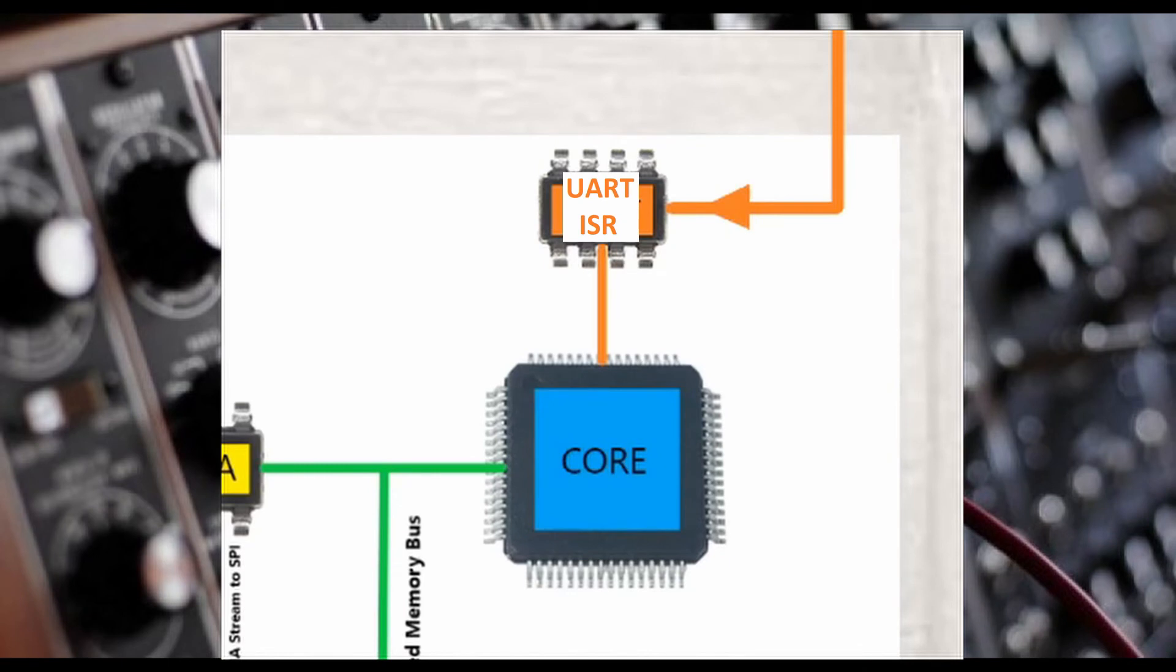The core will check if other Interrupt Service Routines that are running have a higher or lower priority compared to the UART's priority. If another ISR has higher priority, the routine must wait until all higher priority ISRs have completed. Then it can have the core run its functions.